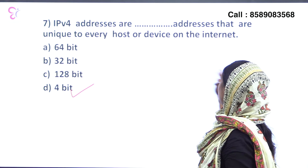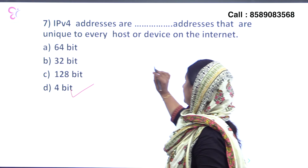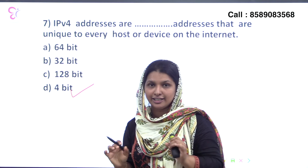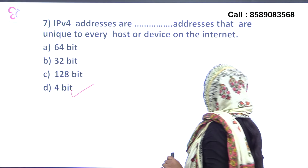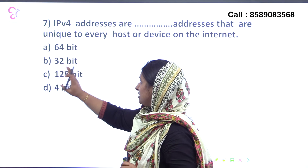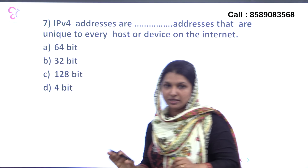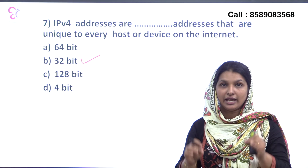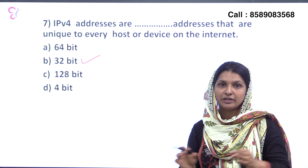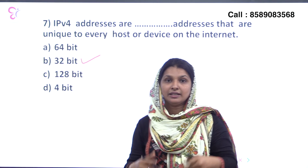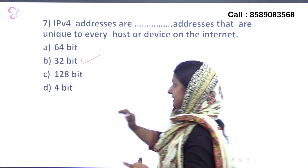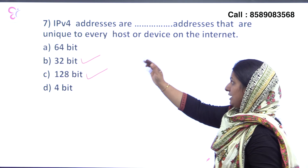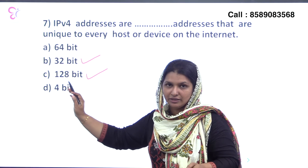Seventh question: IPv4 addresses are unique to every host or device on the internet. What is the bit length of IPv4? The options are 64-bit, 32-bit, 128-bit, and 4-bit. IPv4 is the initial version of the IP address and uses 32-bit addressing. IPv6 uses 128-bit addressing. The answer is 32-bit.